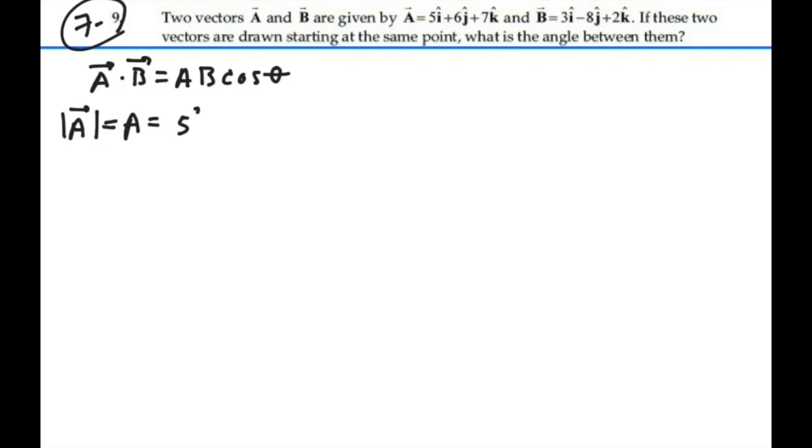So for A, that would be five-squared plus six-squared plus seven-squared, all that square root. So we have five-squared plus six-squared plus seven-squared. Square root is ten-point-five. So that's the magnitude of A.